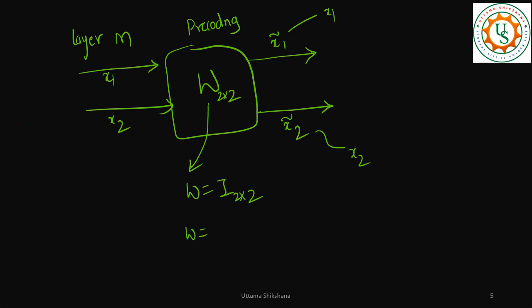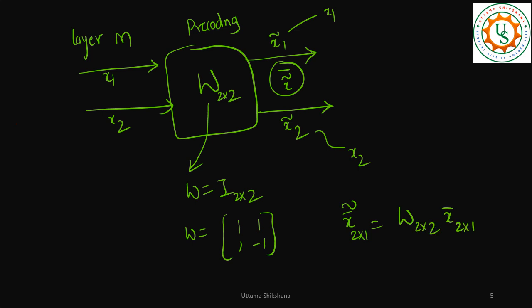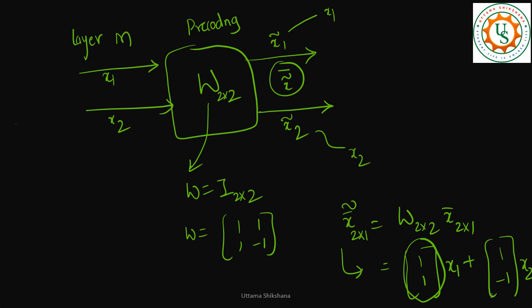But if you apply a weight, say W = [[1,1],[1,-1]], then x̃_bar = W * x_bar. In this case, along direction [1,1] we are transmitting x1, and along direction [1,-1] we are transmitting x2. That's what pre-coding means — along the direction [1,1] in 2D space, x1 is transmitted.